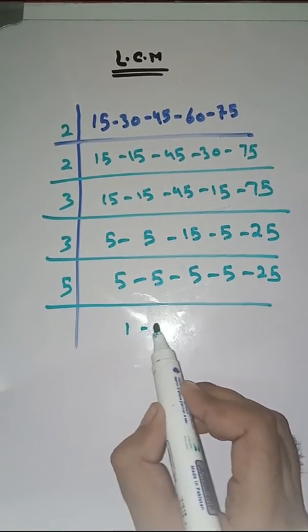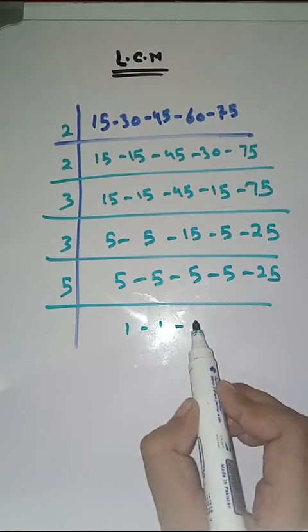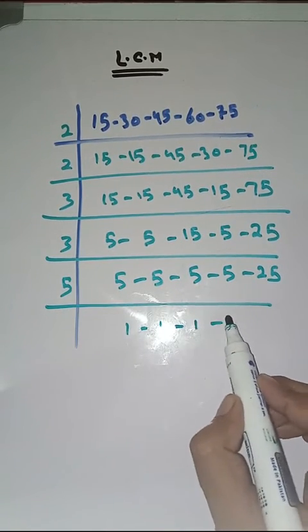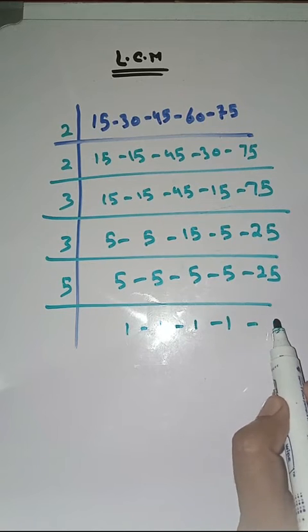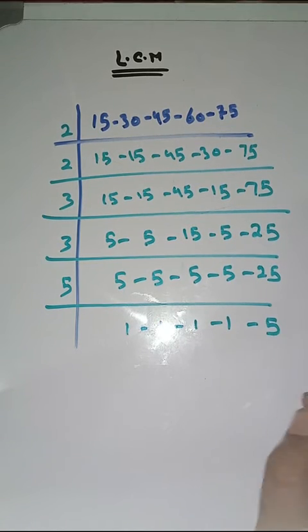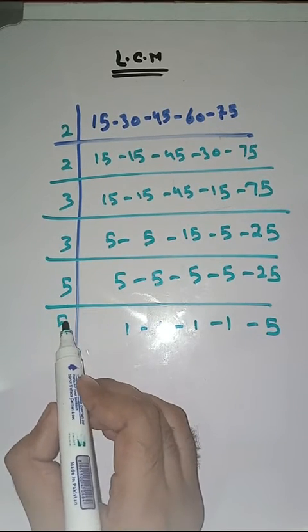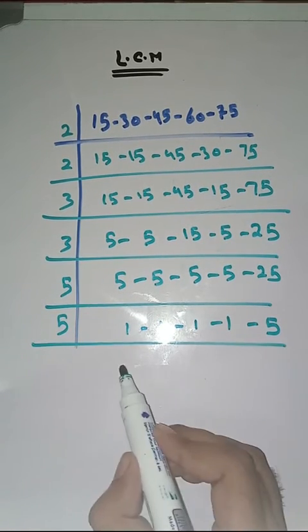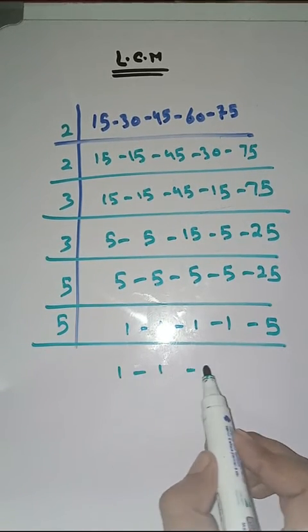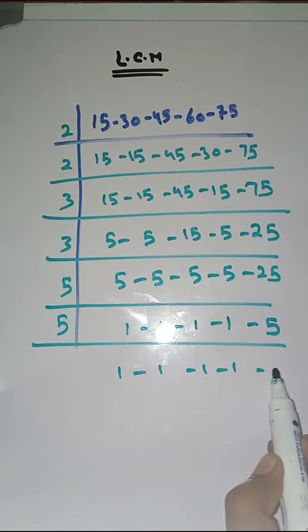Now with 5: 5 1s are 5, 5 1s are 5, 5 1s are 5, 5 1s are 5, 5 5s are 25. Again with 5: 5 1s are 5.